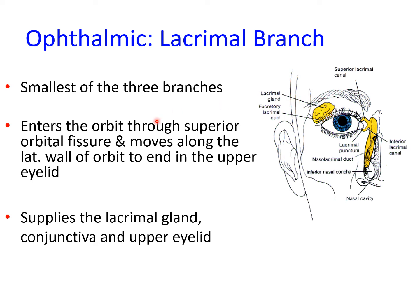The parasympathetic secretomotor fibers to the lacrimal gland do not originate in the zygomaticotemporal branch of the maxillary. They originate in the greater petrosal branch of the facial nerve, which joins the deep petrosal to form the nerve of the pterygoid canal, providing preganglionic parasympathetic fibers to the pterygopalatine ganglion. The postganglionic fibers are distributed through the maxillary nerve and the zygomaticotemporal branch, which communicates with the lacrimal branch of the ophthalmic to finally reach and innervate the lacrimal gland.